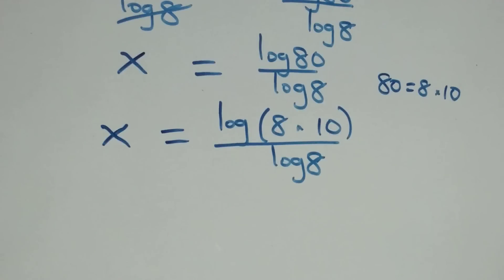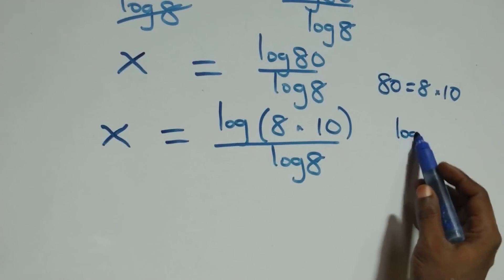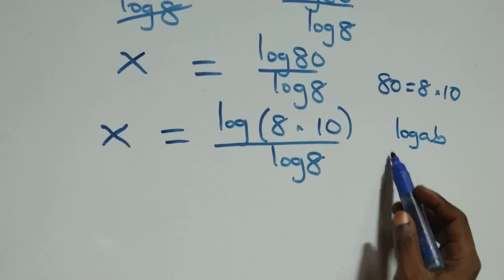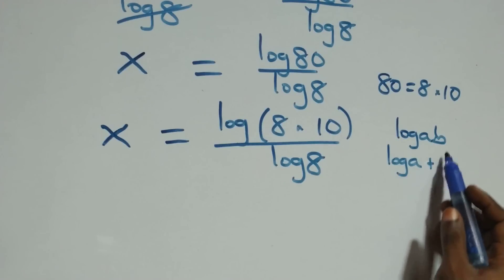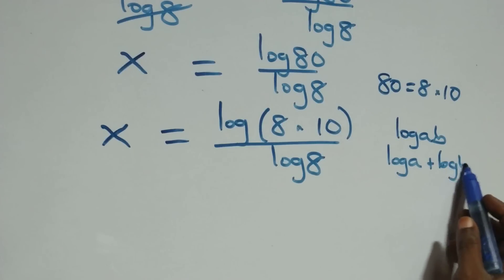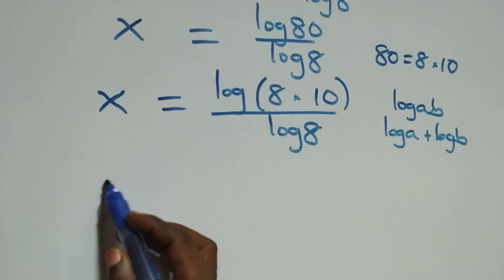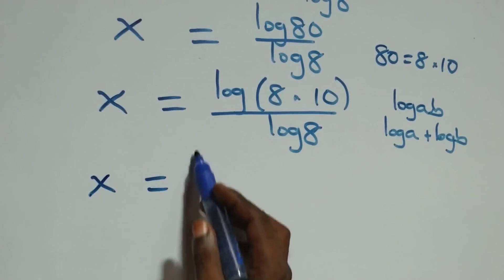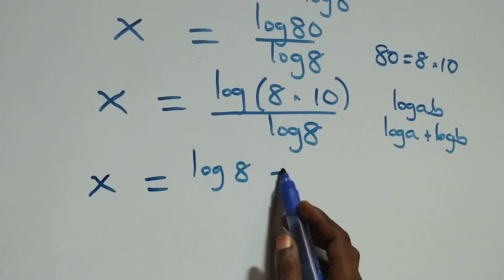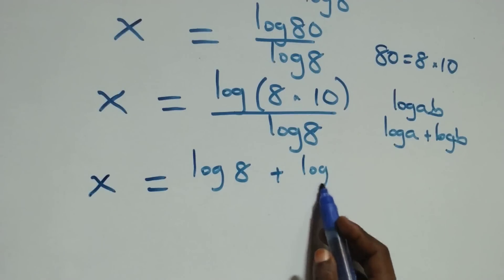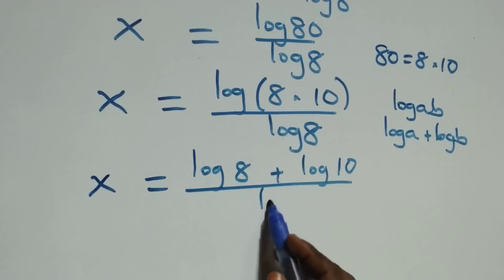This follows from the product law of logarithms: log(a × b) is the same as log a plus log b. So x equals log 8 plus log 10, all over log 8.